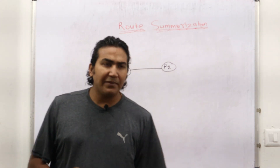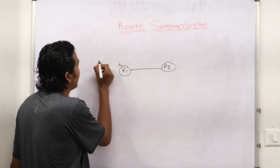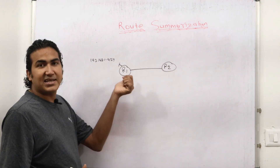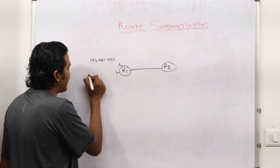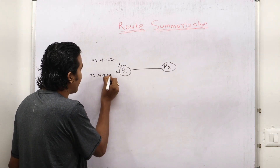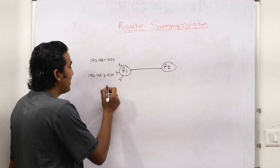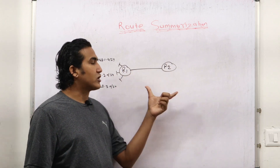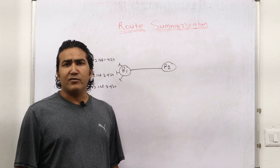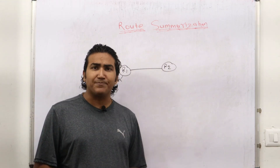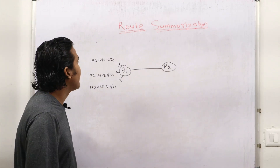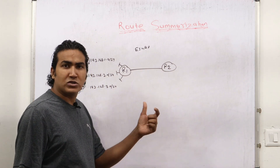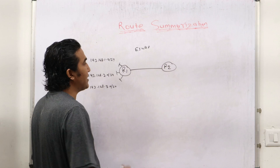Let me connect three networks with Router 1. Let's say Router 1 is connected with 192.168.1.0/24, and one more network 192.168.2.0/24 - both networks are different. And one more network, 192.168.3.0/24. Between Router 1 and Router 2, I am running a routing protocol to exchange routing information - like RIP, EIGRP, OSPF, or any other routing protocol. Let's say I am using EIGRP on Router 1 and Router 2 to exchange the routing table.